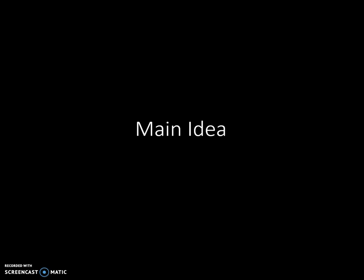I like to think of the process as a mathematical equation: topic plus the author's view or ideas equals the main idea. The first part of the equation is finding the topic, which is usually very straightforward — it's basically asking yourself what is this passage or chapter about. The author's view or ideas relates to the purpose, tone, and supporting details that the author gives you.